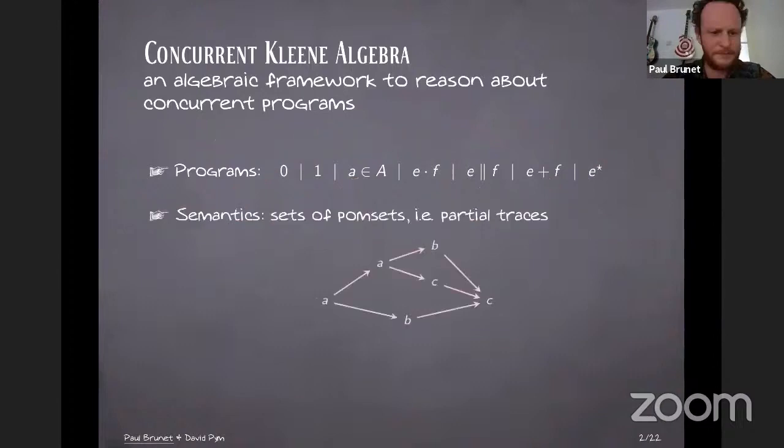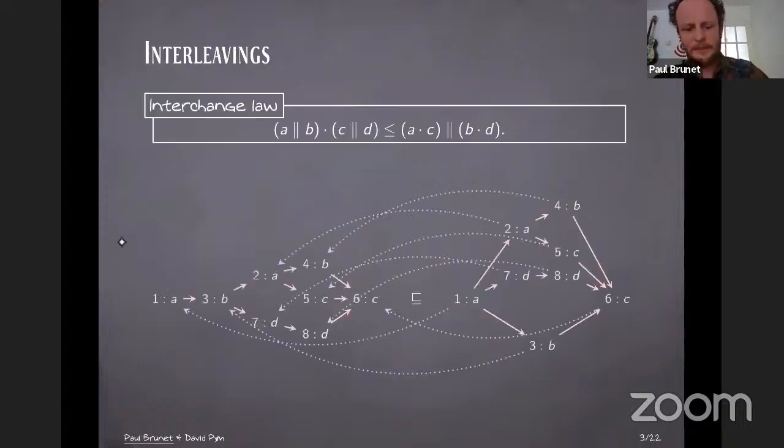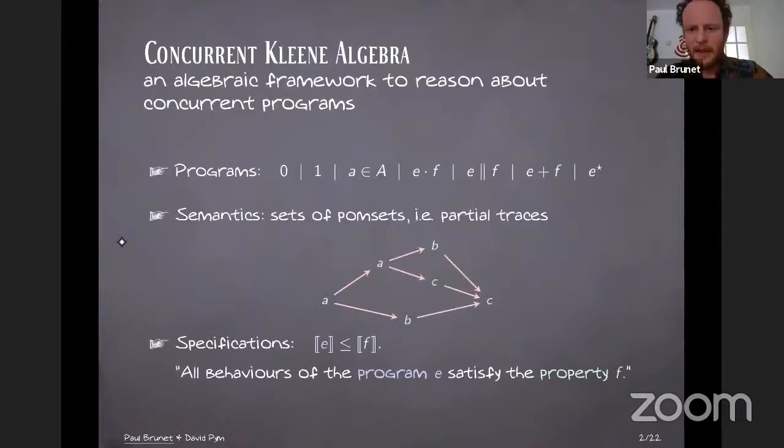The semantics of concurrent Kleene algebra is given in terms of sets of Pomsets, which you should think about as being partially ordered traces. So in a sequential program, you can give a sequential trace semantics where a program is associated to a set of words, which corresponds to every finite execution of this.